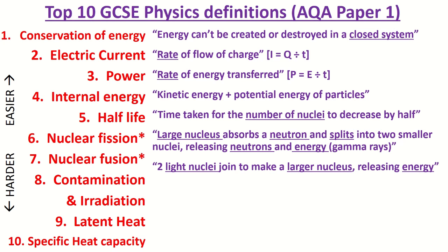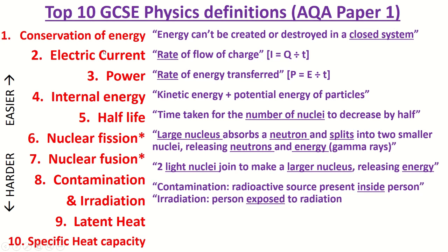Nuclear fusion, on the other hand, is two light or small nuclei joining together to make a larger nucleus, and they convert some of their mass into energy. The example here would be hydrogen.